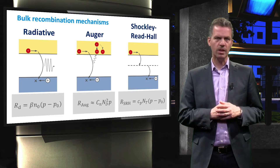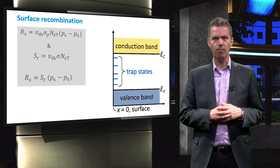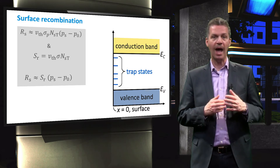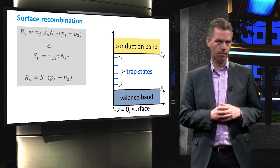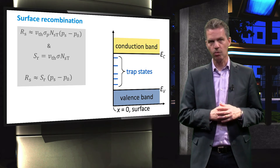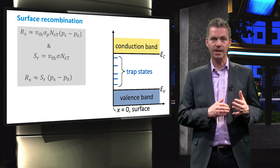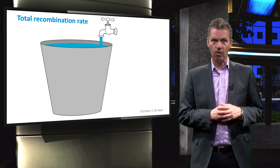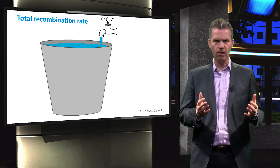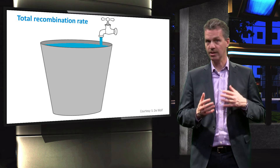Important to notice is that the rates are proportional to the excess hole concentration P minus P0. We have considered surface recombination as well, and in that case the recombination rate R_S is proportional to the excess hole concentration at the surface of this N-type material and to the surface recombination velocity S_R. In order to understand how the different recombination mechanisms contribute to the total recombination, we consider a bucket that is filled by a tap — the tap is the equivalent of the generation of charge carriers — and when the bucket is full it will overflow, and the overflowing water can be considered as the recombination that balances the generation.